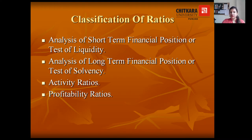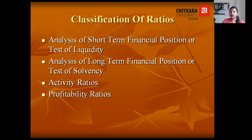Now, the classification of ratios comprises four broad categories. First is analysis of short-term financial position, or liquidity ratios. Second is analysis of long-term financial position, or test of solvency ratios. Third is activity ratios, and fourth is profitability ratios. We would cover them one by one.